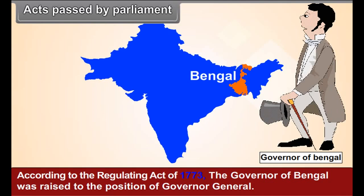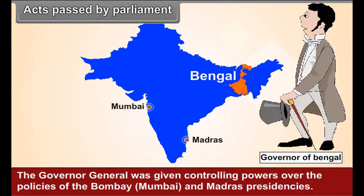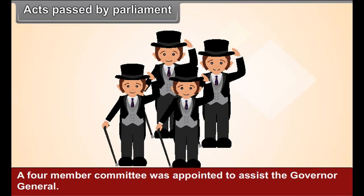Acts passed by Parliament. According to the Regulating Act of 1773, the Governor of Bengal was raised to the position of Governor General. The Governor General was given controlling powers over the policies of the Bombay, Mumbai and Madras presidencies. A four-member committee was appointed to assist the Governor General.